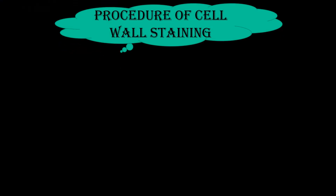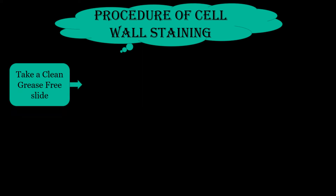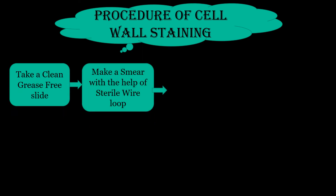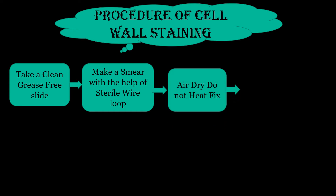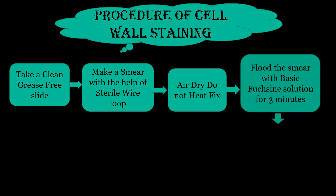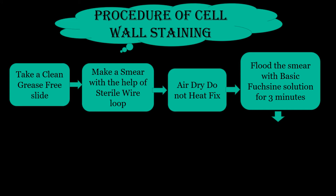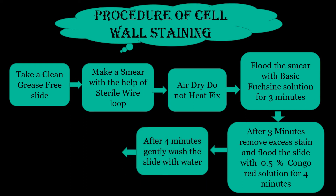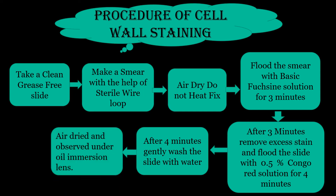The procedure of cell wall staining: First, take a clean grease-free slide and make a smear with the help of a sterile wire loop. Air dry — do not heat fix the slide. Flood the smear with basic fuchsine solution for 3 minutes. After 3 minutes, remove excess stain and flood the slide with 0.5% Congo red solution for 4 minutes. After 4 minutes, gently wash the slide with water, air dry it, and observe under oil immersion objective.